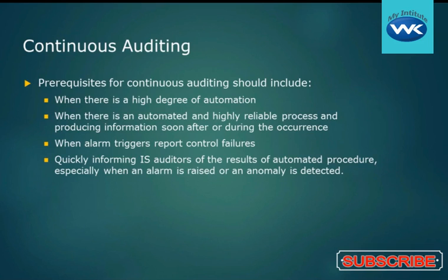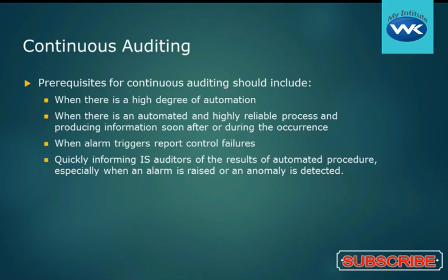When there's an automated and highly reliable process producing information soon after or during the occurrence is another time when we should implement continuous auditing. That might include credit card processing, because as soon as you go through that process, it's producing information during the occurrence — pulling bank funds and those types of things. You may also consider continuous auditing whenever an alarm triggers so that you can report control failures.